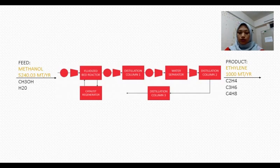It goes into the heater and compressor and then to the fluidized bed reactor. Also, there is catalyst regenerator over there. And then the product of the fluidized bed reactor will go into the heater and compressor and then it goes into the distillation column one. After that, it goes again into the heater and compressor, into the water separator, and then it goes into the compressor, and then distillation column two, and lastly into distillation column three. Our product is ethylene with an amount of 1000 metric ton per year.